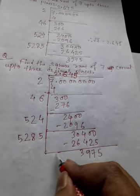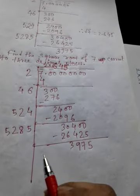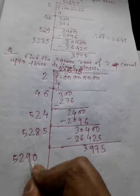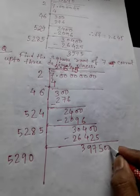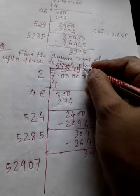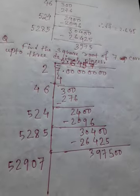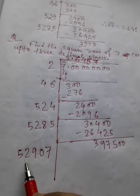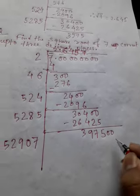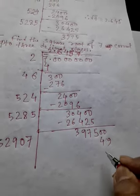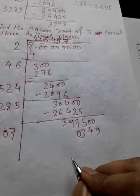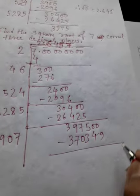Now double of 2645 is 52900. We bring the last pair of zeros. If we take 7 here, we take 7 in the quotient as well. Then 52907 into 7 gives the result, and the remainder follows.